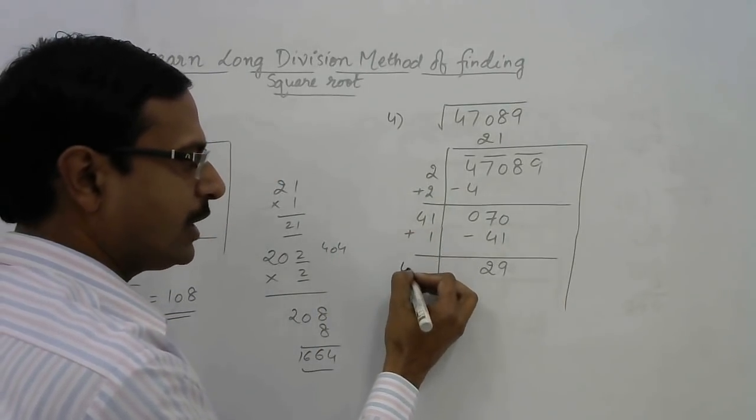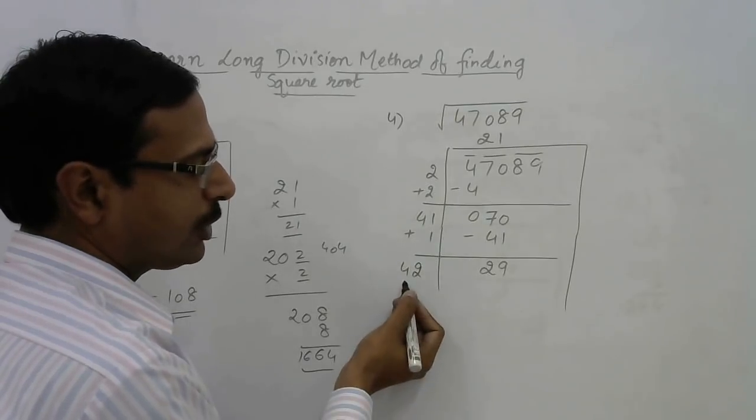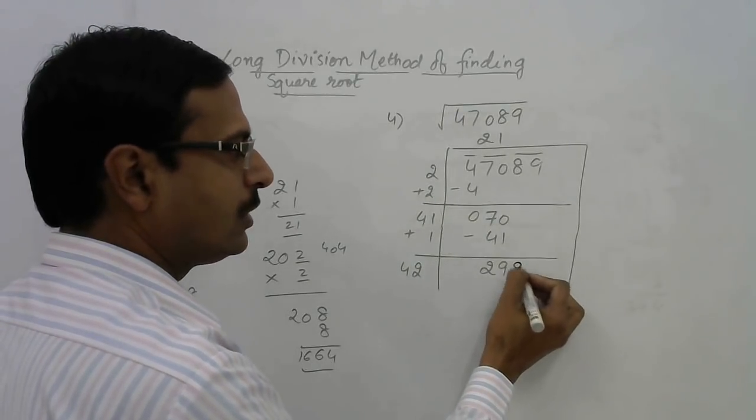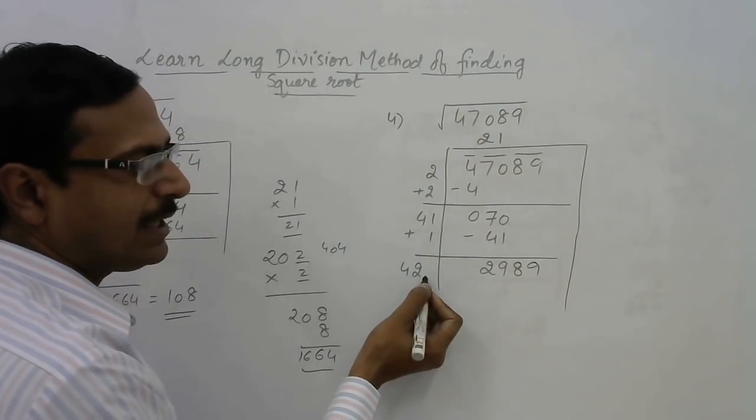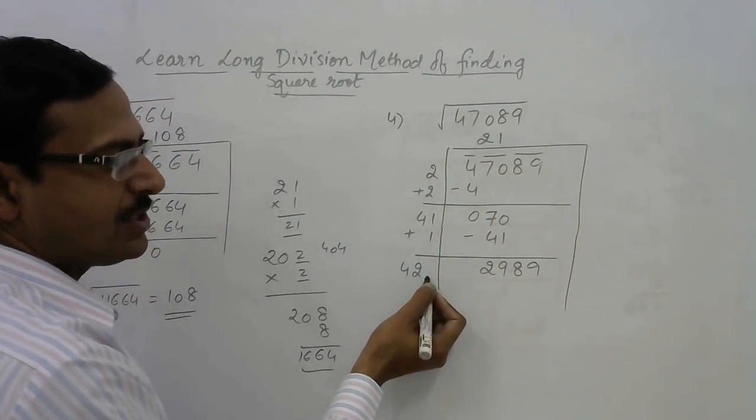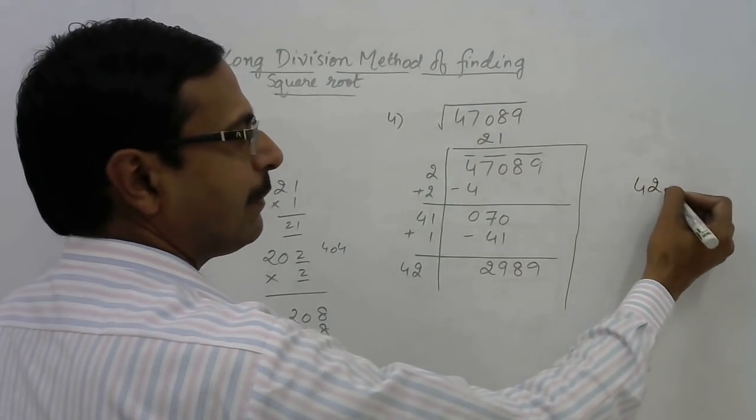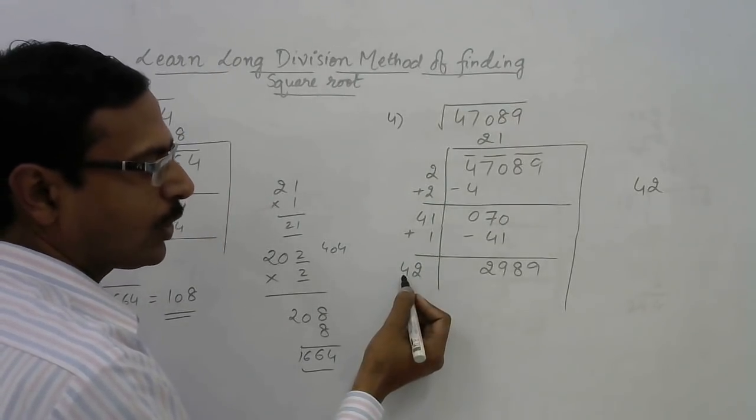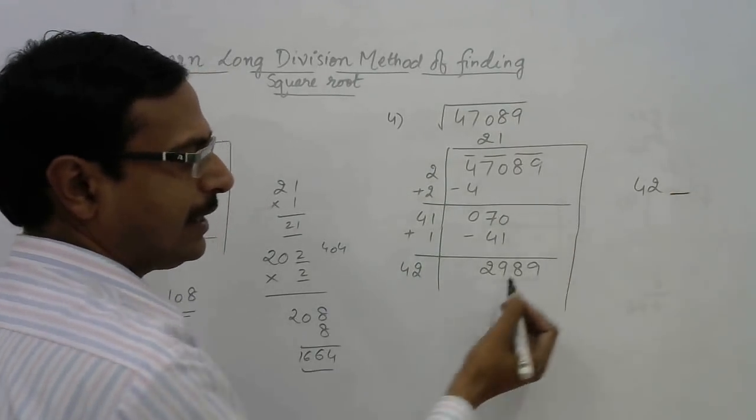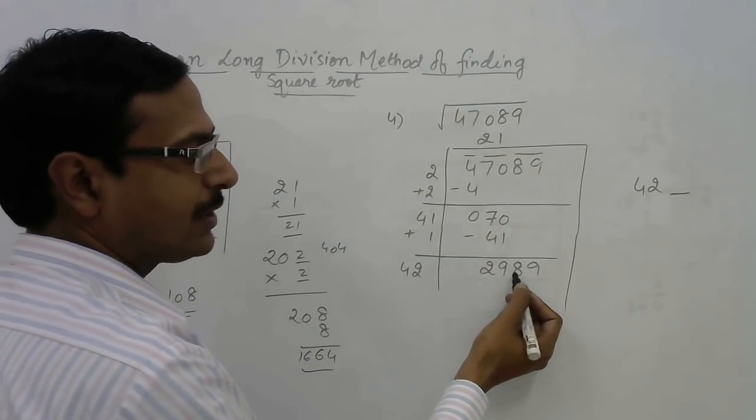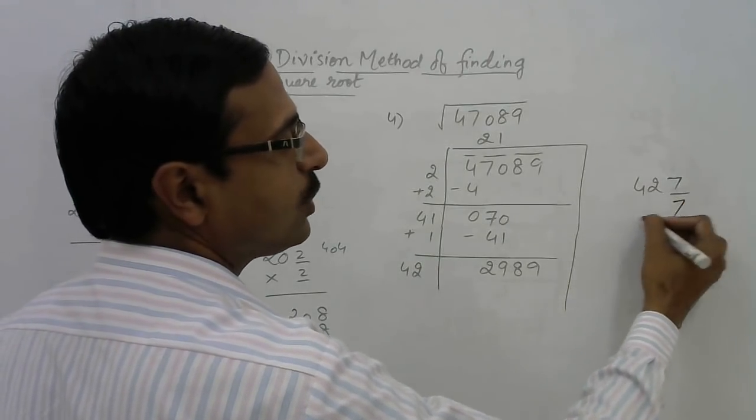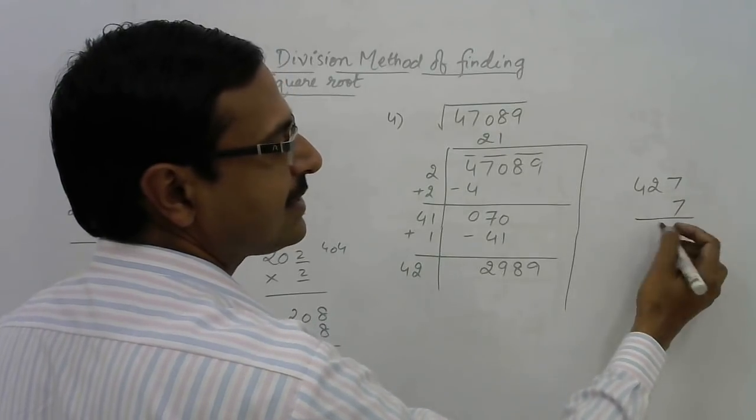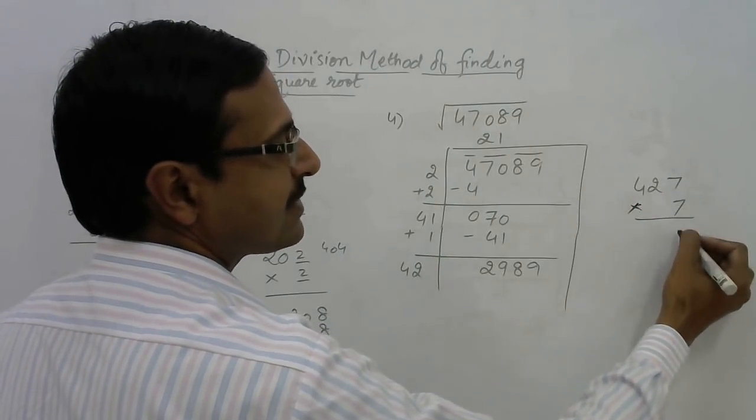42 is more than 29, so bring 89 down. Now you need to make it a 3 digit number. 42, and by just using logic, we know that this is 400 something and it has to be brought to 2900 something. So it should be 427 into 7. We can test this now.